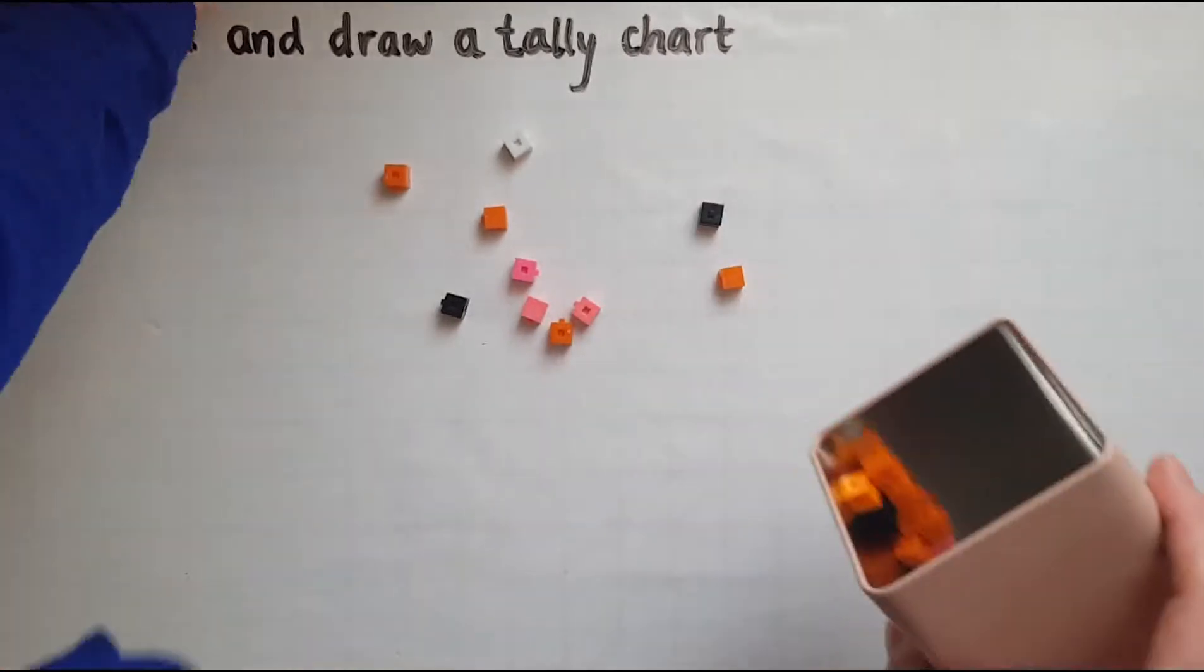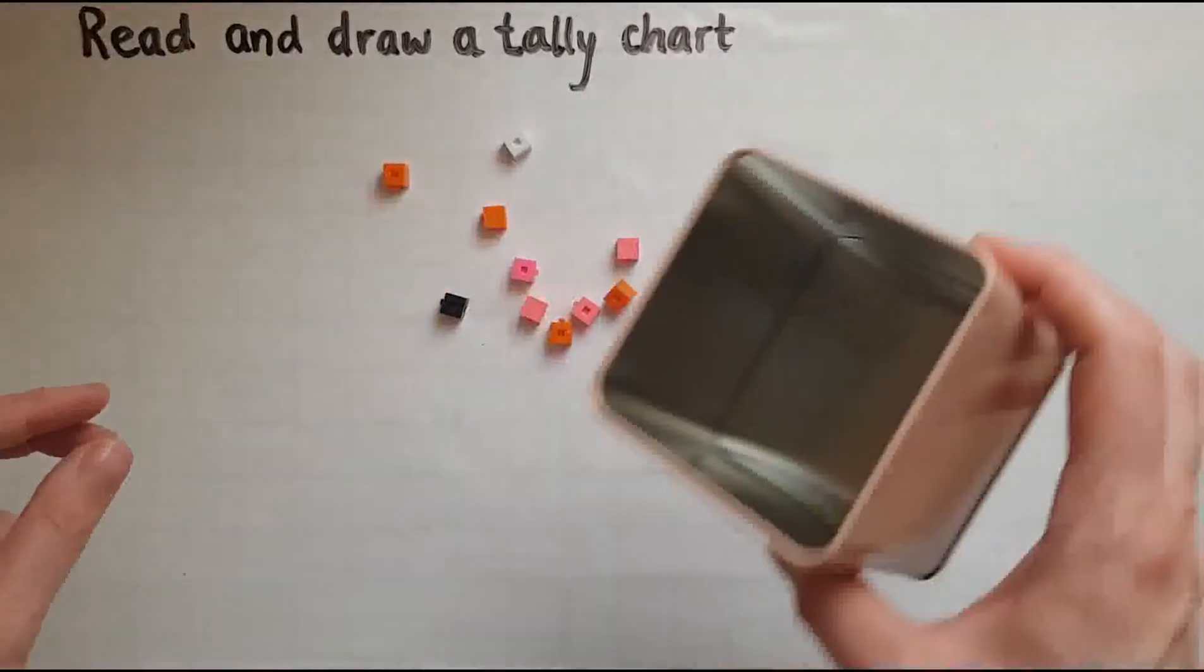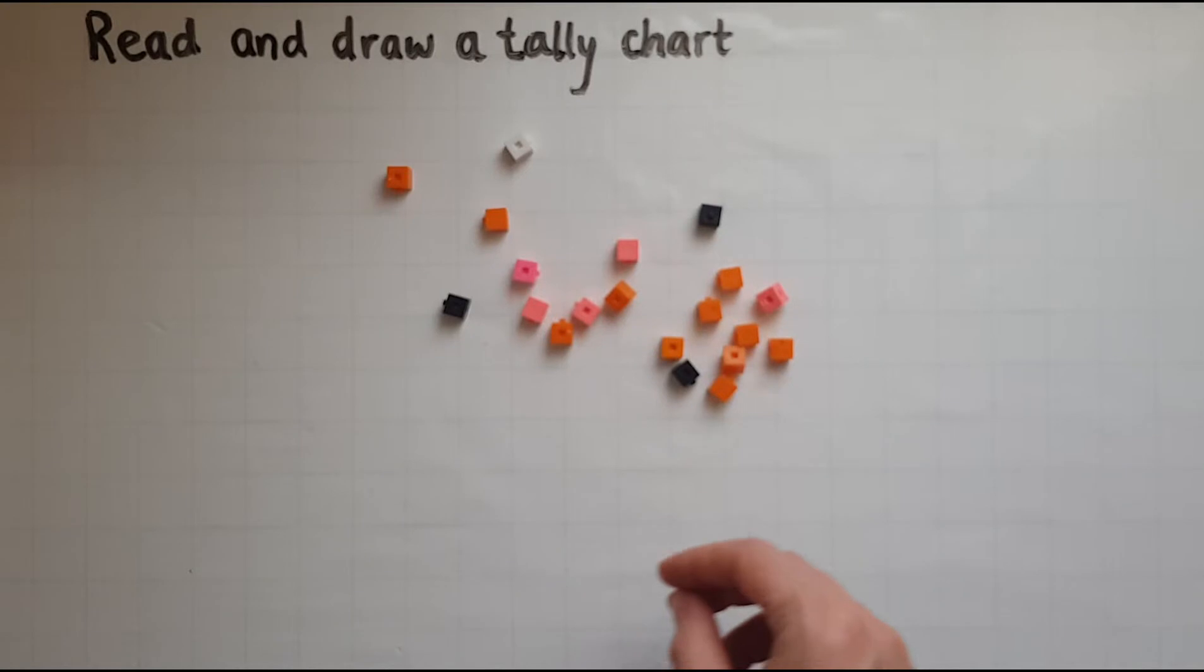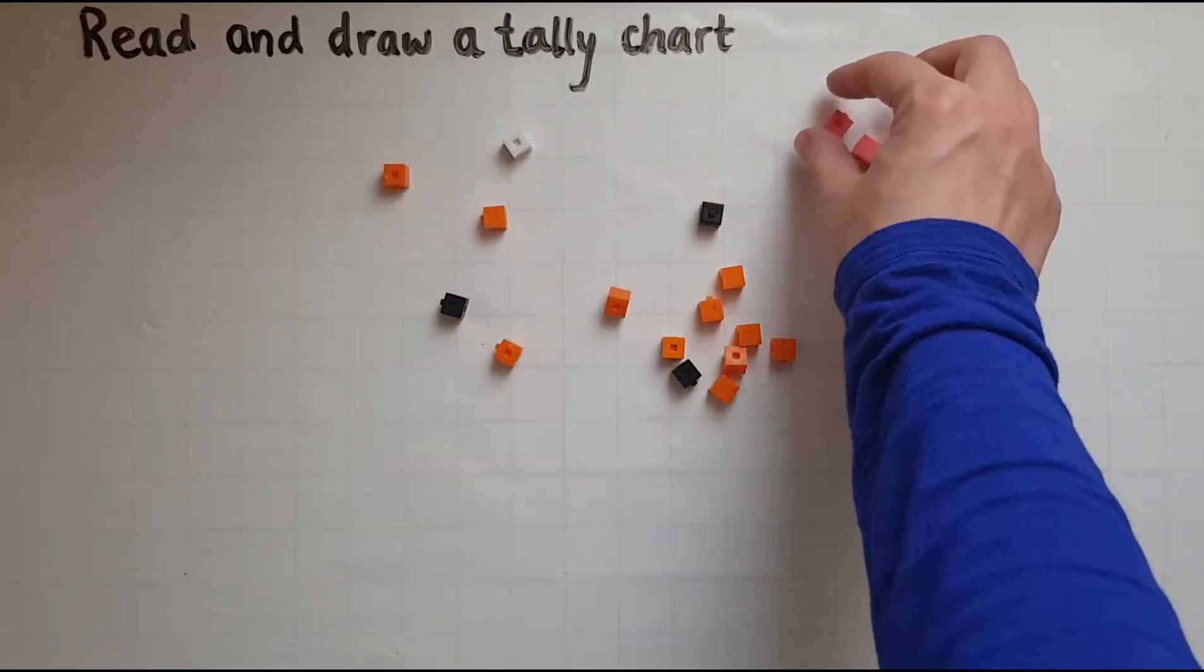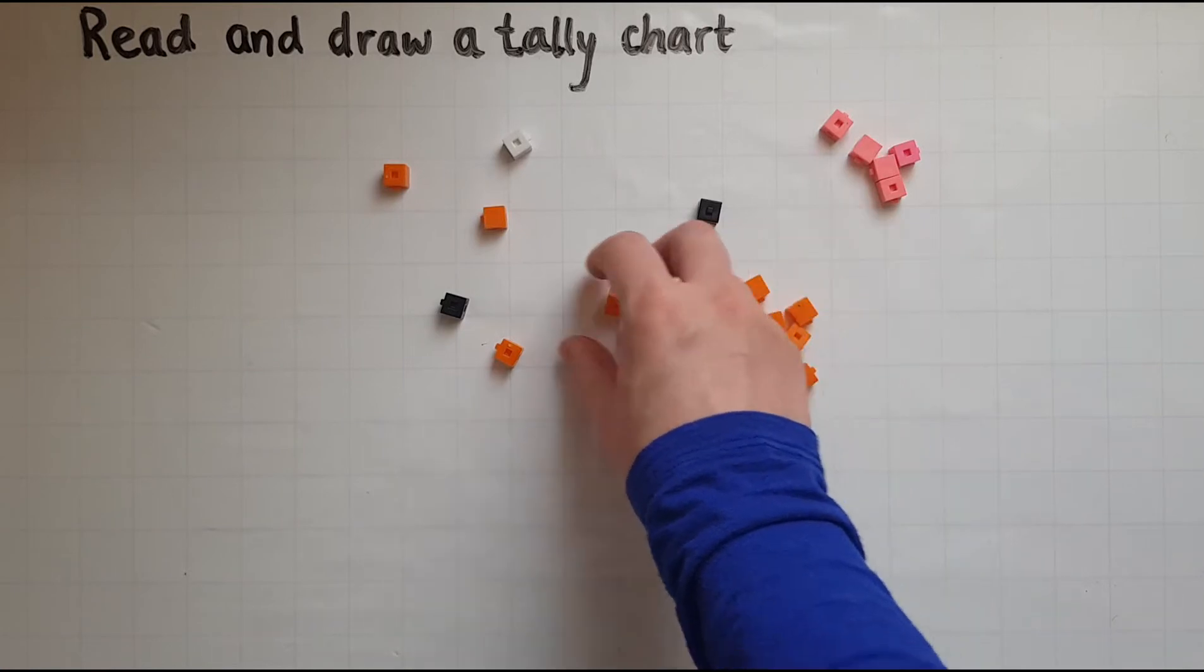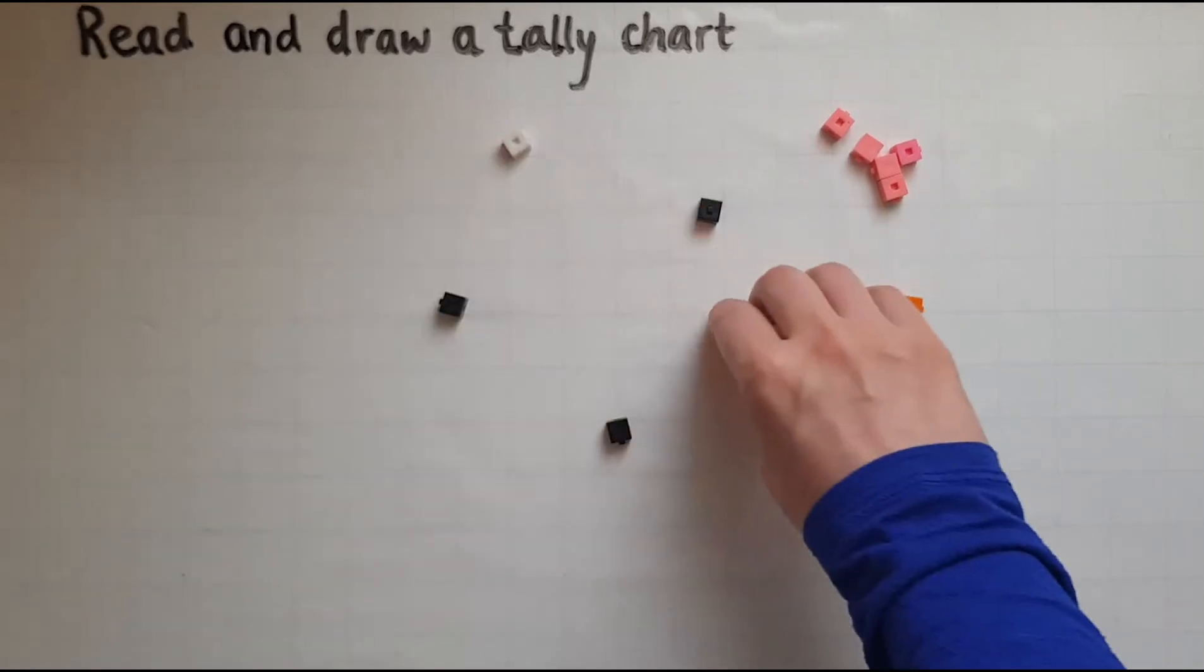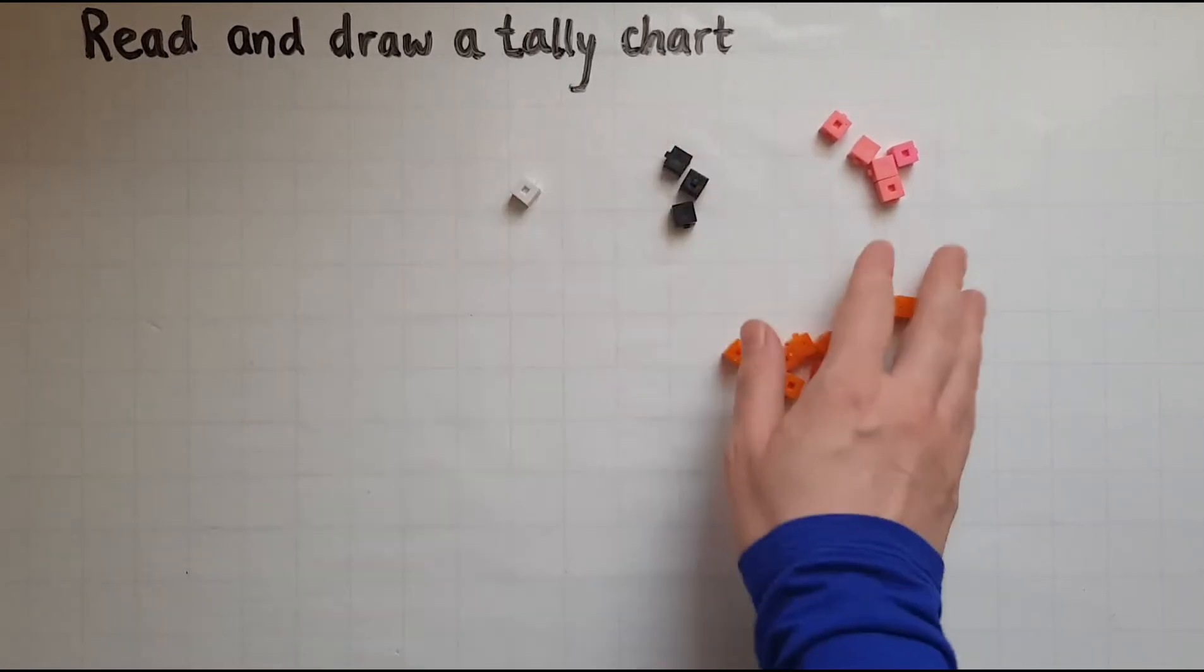So I empty these out. Now I'll sort them by color. So I've got pink ones here, orange, black and white.